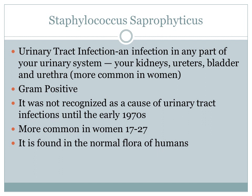Staphylococcus saprophyticus is a urinary tract infection. A urinary tract infection is an infection of any part of your urinary system, including your kidneys, uterus, bladder, and urethra. This is more common in women than males. It is also a gram-positive bacteria, as mentioned before. Staphylococcus saprophyticus was not recognized as a cause of a urinary tract infection until the early 1970s. It is more common in women in the age group of 17 through 27, and is also found in the normal flora of humans.